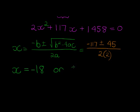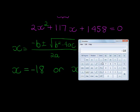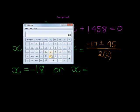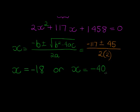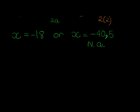Or x can be, let's try the other one: -117 minus 45 equals -162 divided by 4. -40.5. And this one is not applicable. It's a good answer but it doesn't apply to this question because they said all of the terms are integers. So this one won't apply.